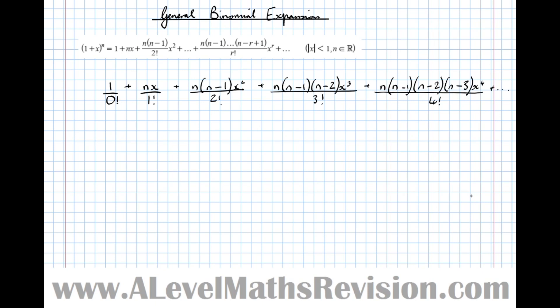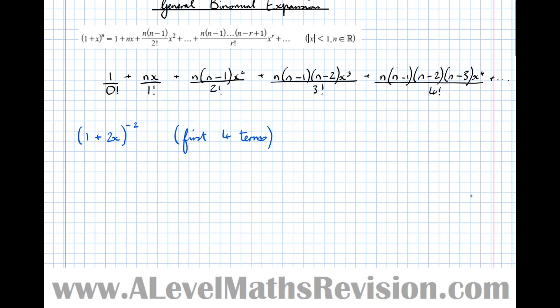Let's do an example. Let's say (1 + 2x) to the power of minus 2, and we'll do the first four terms. The first number in the bracket is 1, and that's what we need. The formula only works when the number is 1.